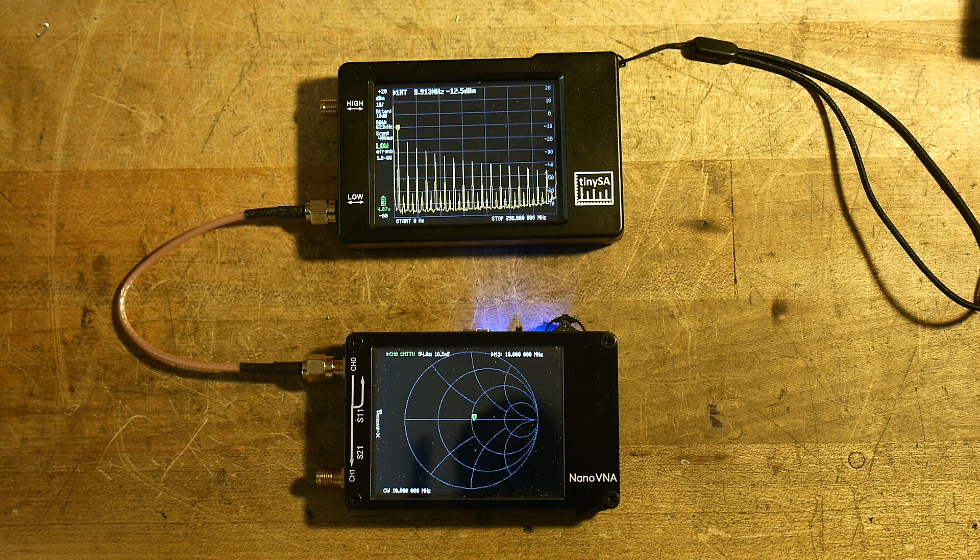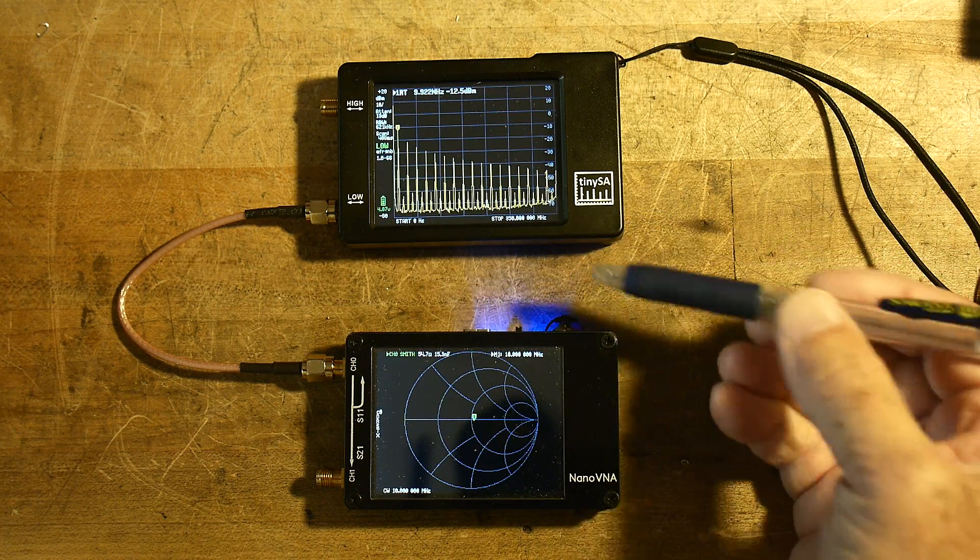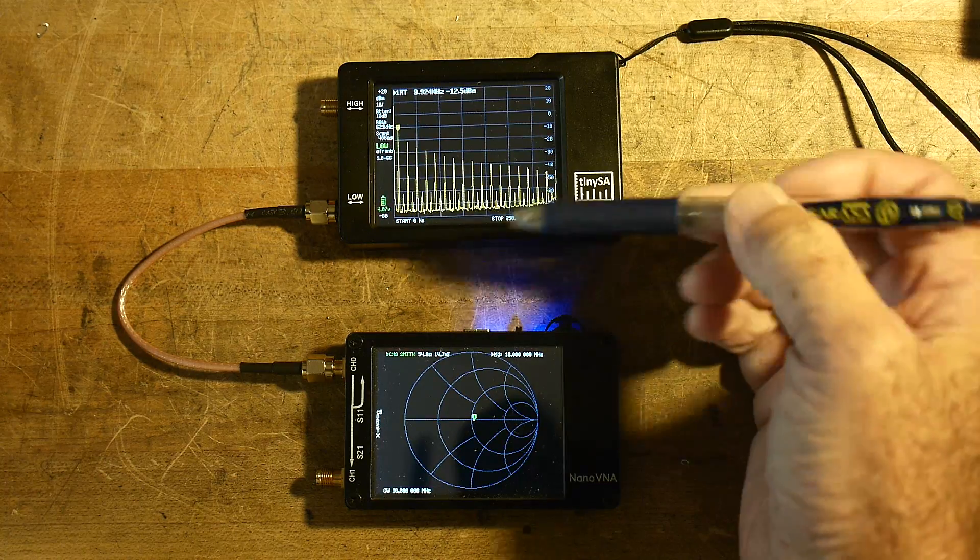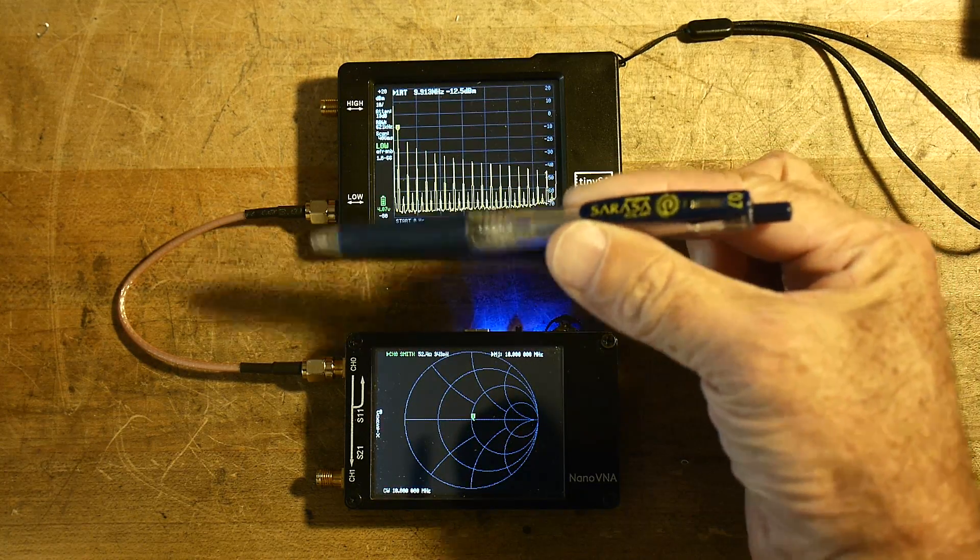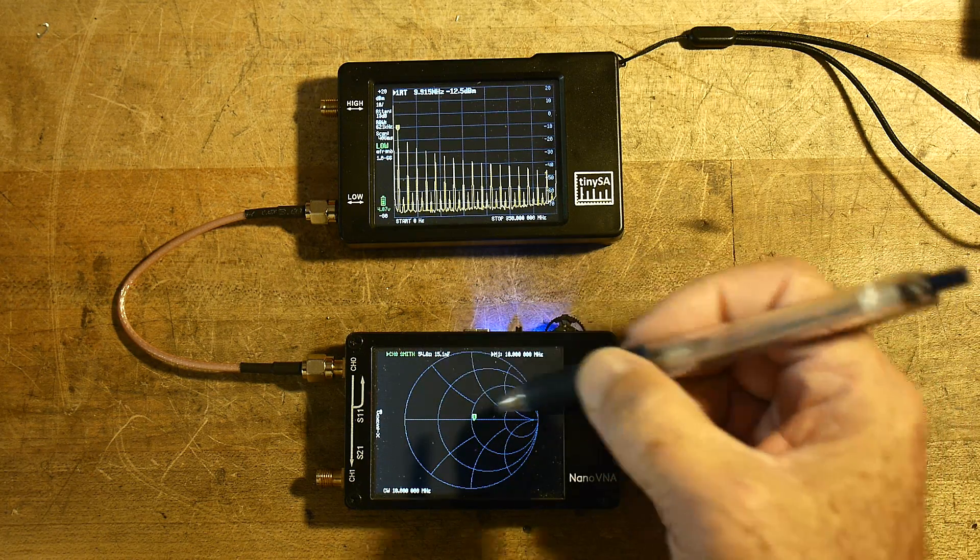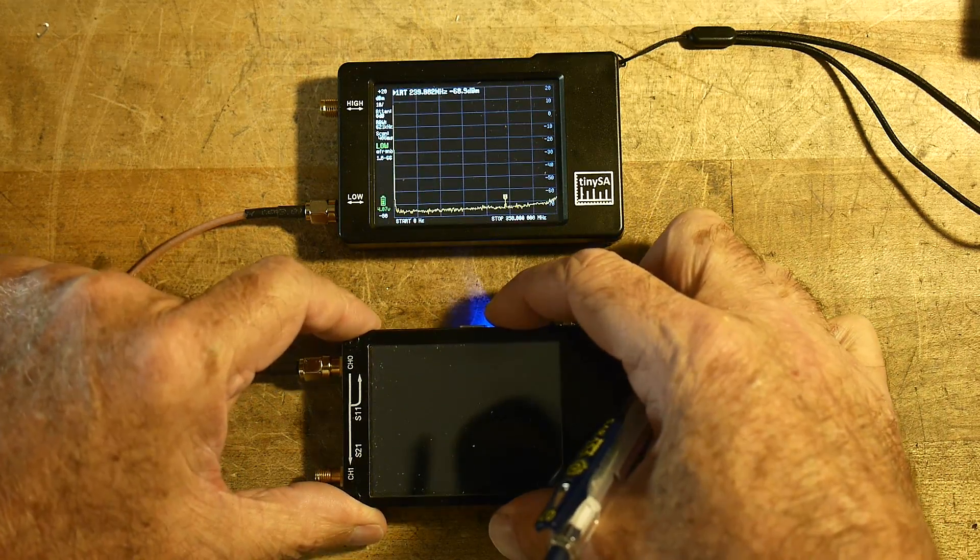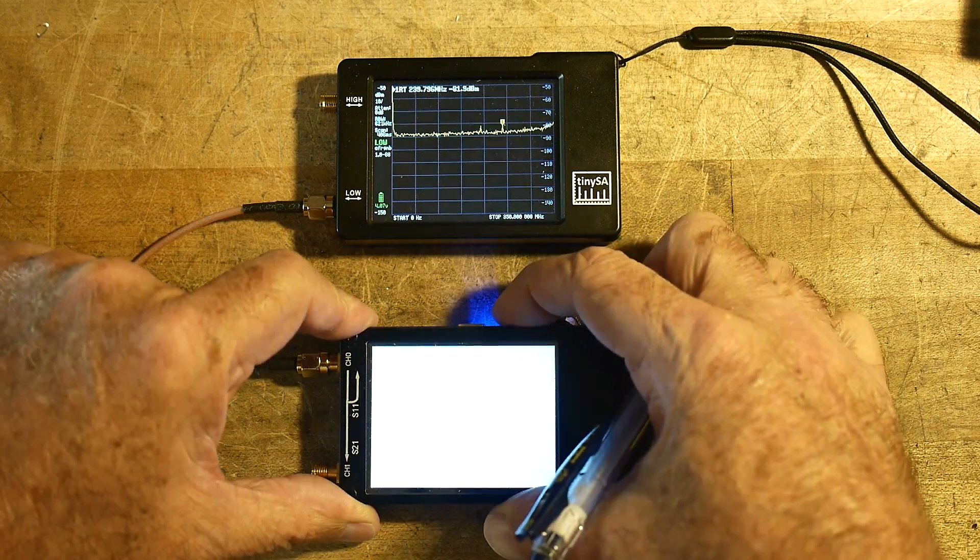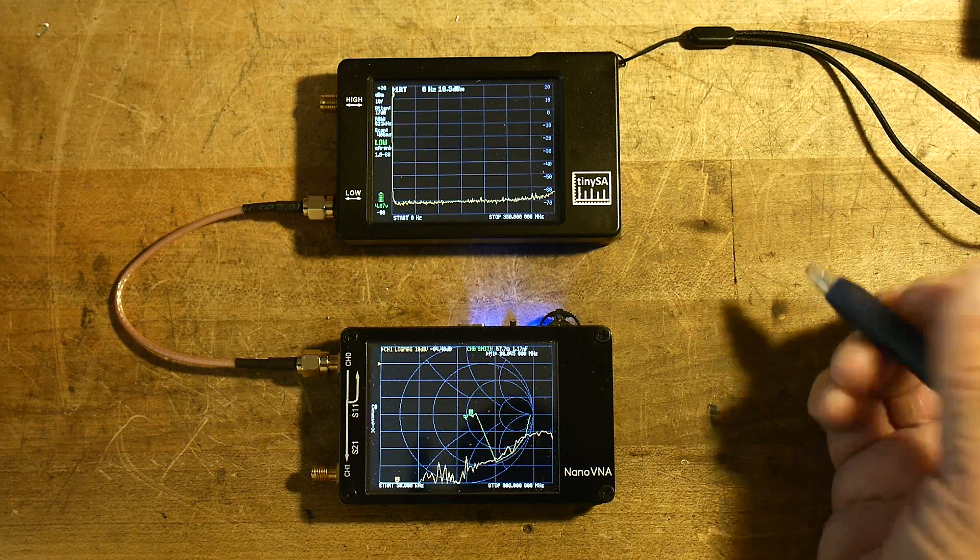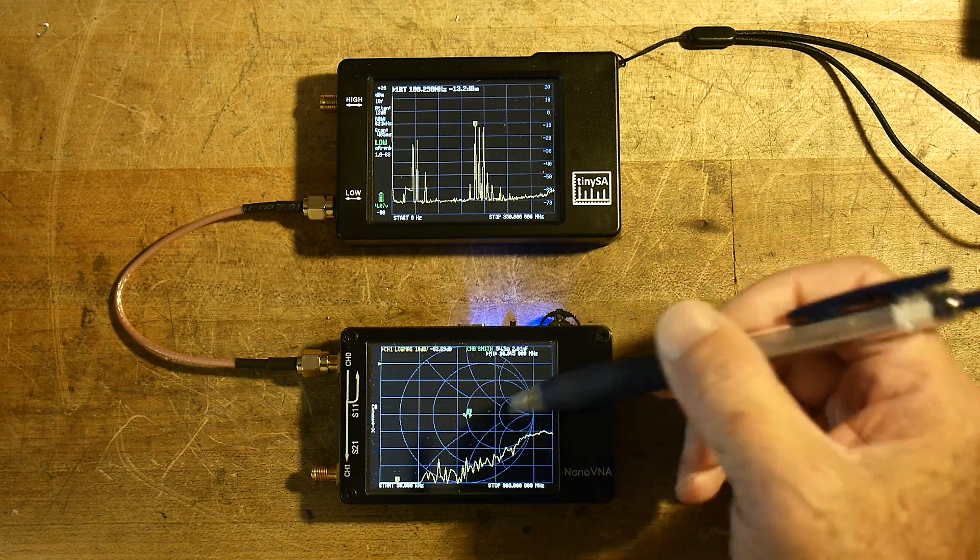Alright, this video is because I couldn't resist. Here's the nano VNA and here's the tiny SA side by side. In fact, they're connected together. Let me just turn it on and off so you can kind of know what it can do when it first turns on. You can see the spectral data—it's going crazy because this thing's sweeping right when you first turn it on.